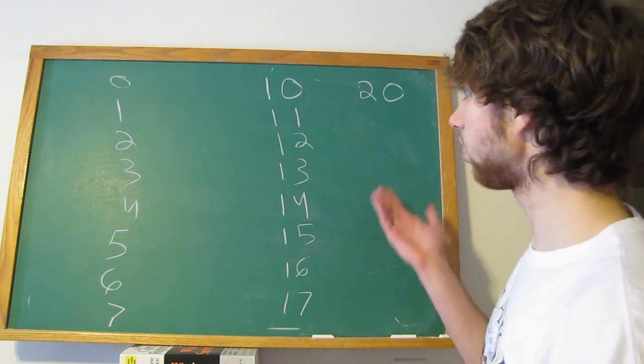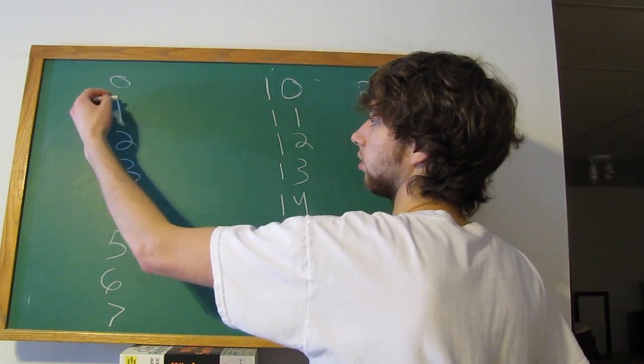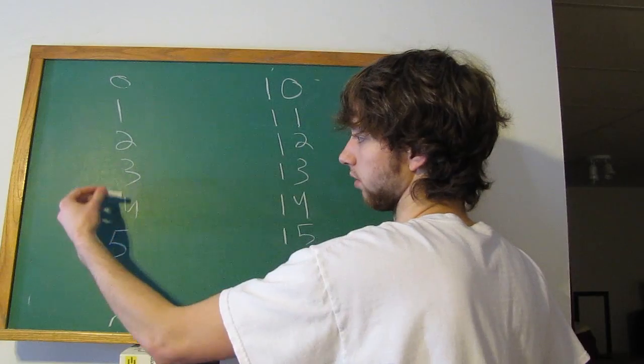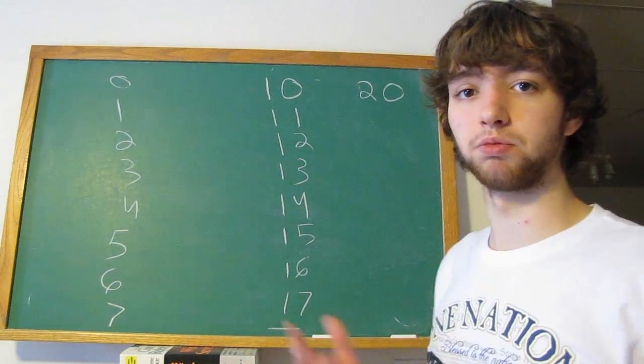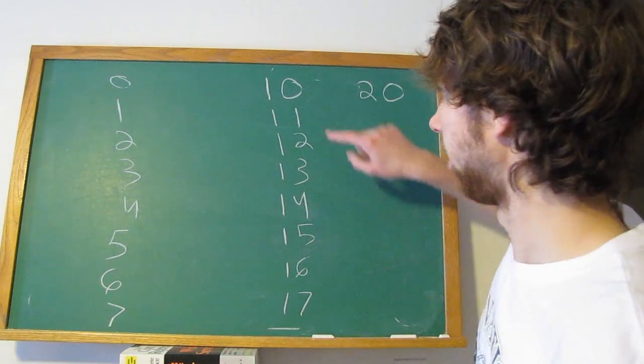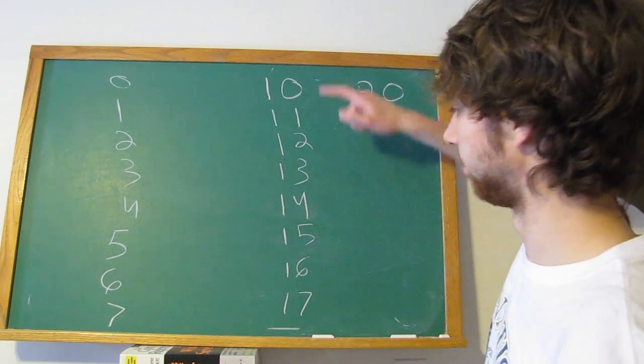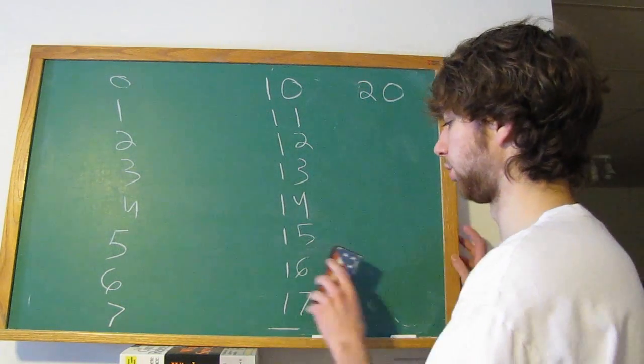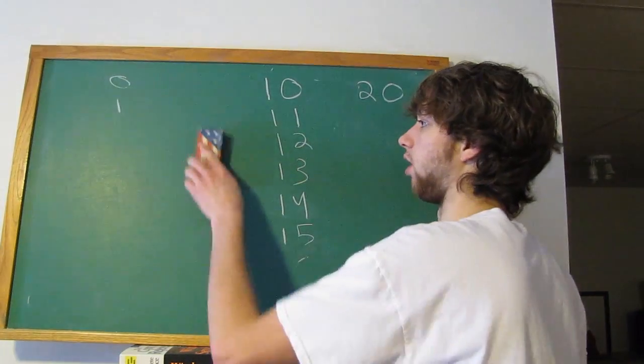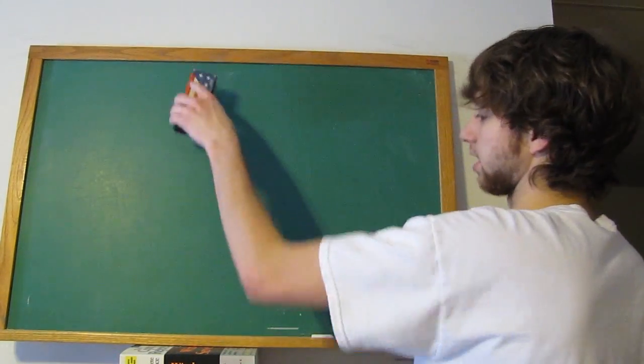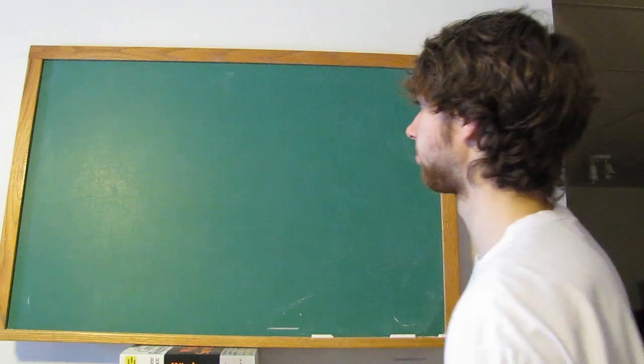So each column has 8 total possibilities. And then we add another digit and we keep going. So when you have a long strand of octal, it's not the same as decimal.